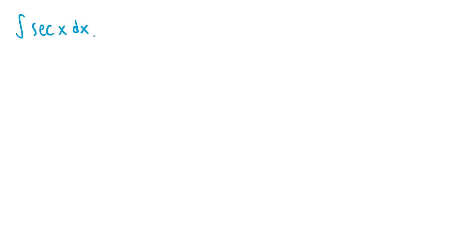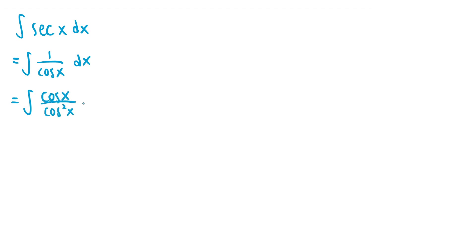So how do we do the integral of secant of x? At first glance, it may seem like there's no substitution that we can do because there's only one term. But we can rewrite secant of x as 1 over cosine of x. And then if we multiply both the numerator and denominator by cosine of x, we end up with cosine of x over cosine squared of x. We can use the Pythagorean identity cosine squared of x equals 1 minus sine squared of x to rewrite the entire integrand as cosine of x over 1 minus sine squared of x.